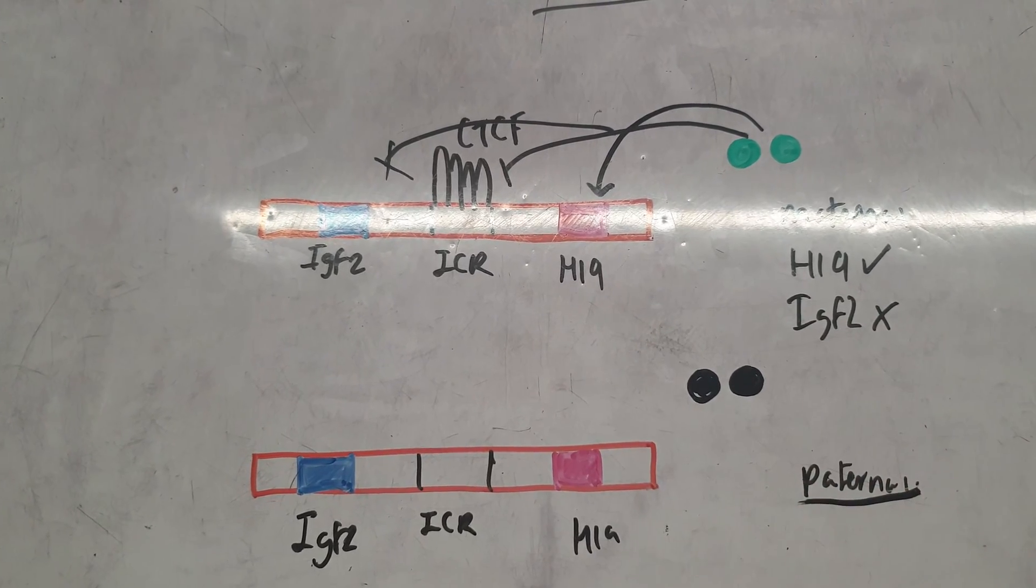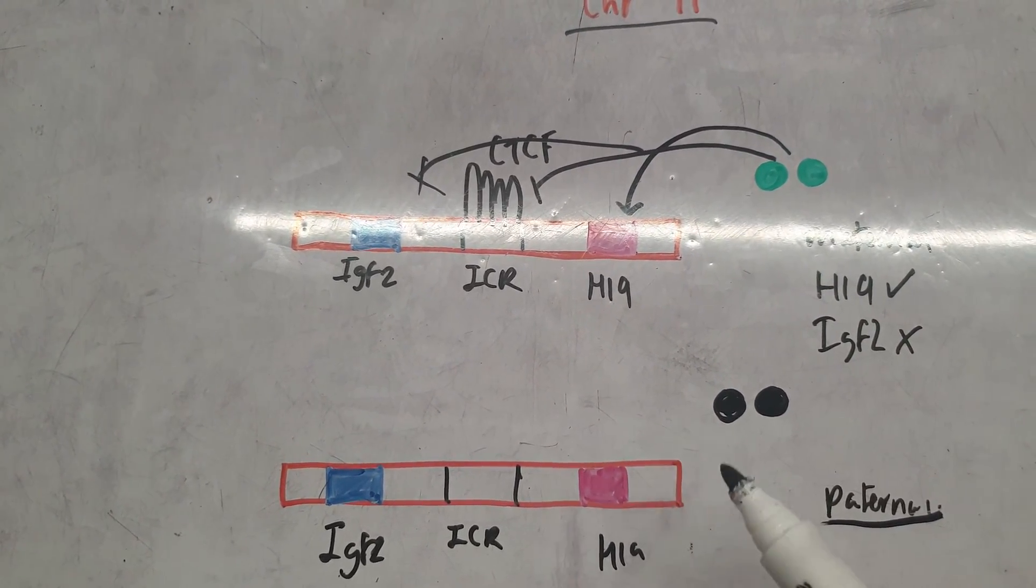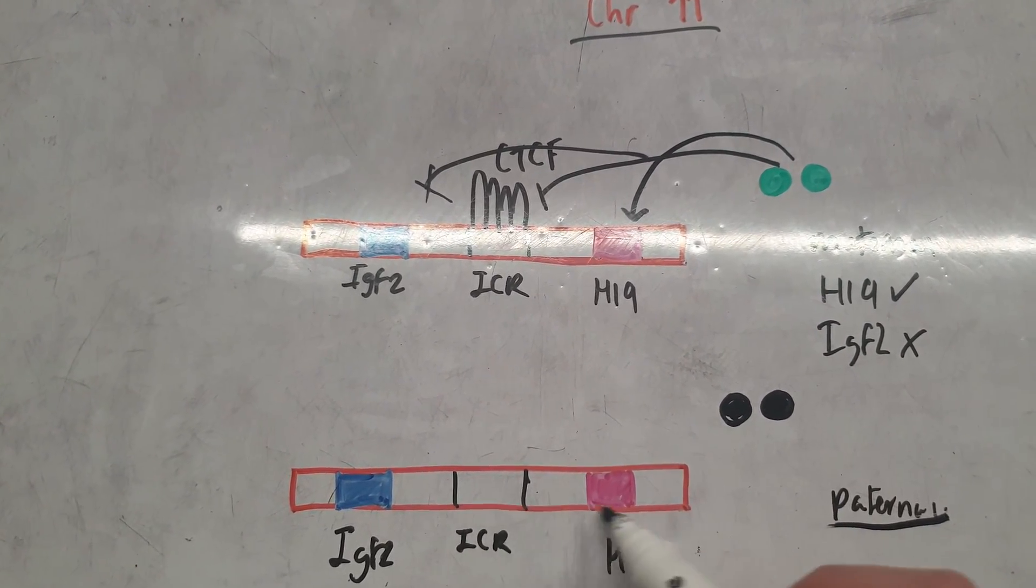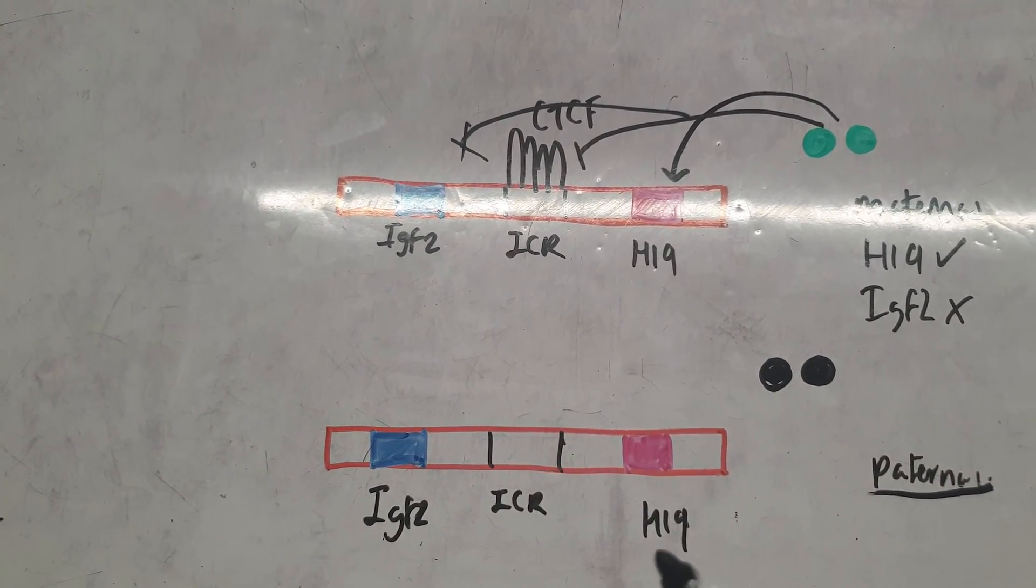We don't want it binding to H19 because we already said H19 is coming from the maternal chromosome 11. So what has to happen here is we need to somehow silence this region of the chromosome but still have expression of IGF2.